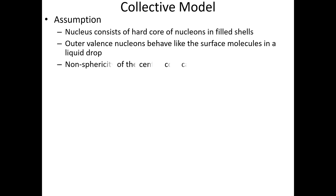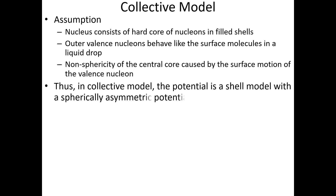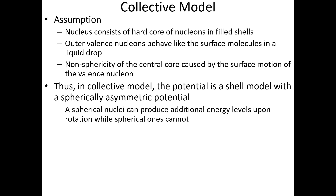The non-sphericity of the central core is caused by the surface motions of the valence nucleons. Thus, in the collective model, the potential is a shell model potential with a spherically asymmetric potential, which means that non-spherical nuclei can produce additional energy levels upon rotations.